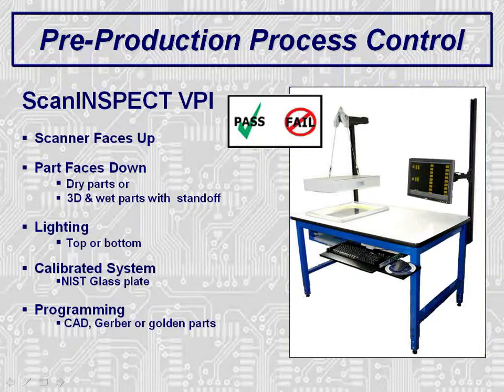The system is very versatile with top or bottom lighting, color or black and white imaging. It is an accurate system utilizing a NIST-certified glass calibration plate. The resolution of the system is sufficient to inspect very small features. The system is in use today in production facilities, inspecting apertures as small as 50 microns, or 2 mils. The programming of the system can be done either by CAD, Gerber, or Golden Part.